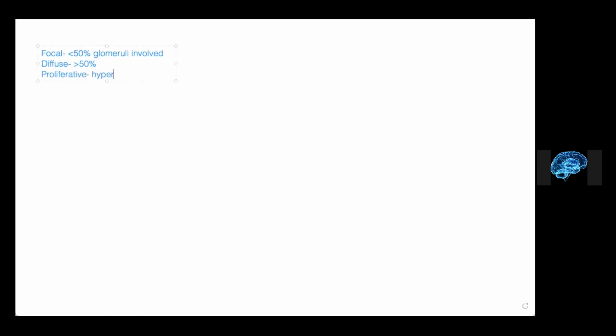Diffuse basically means greater than 50% of glomeruli involved. An example may be diffuse proliferative glomerulonephritis, and what proliferative means is that you actually get hypercellular glomeruli. Next is membranous — I always heard the phrase membranous glomerulonephritis. Membranous basically means thickening of the GBM — the glomerular basement membrane, not glioblastoma multiforme. These are two completely different things.